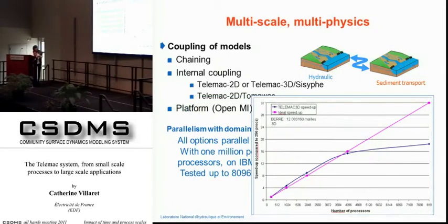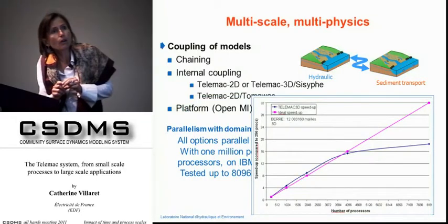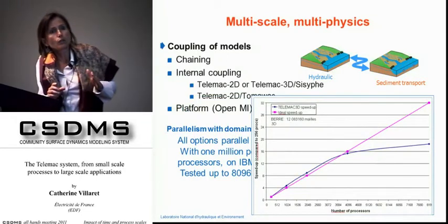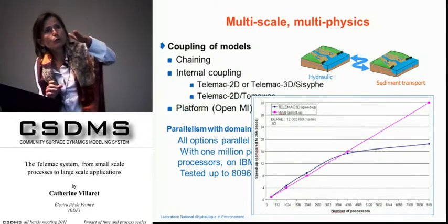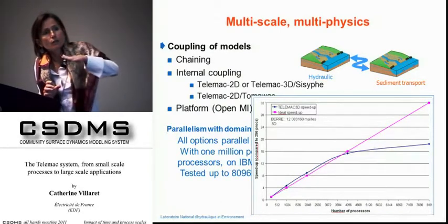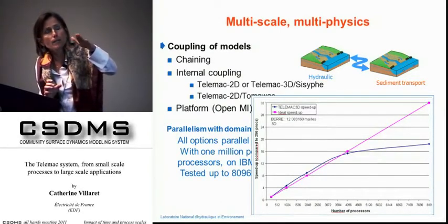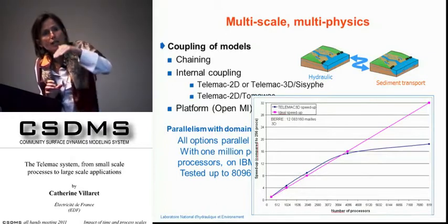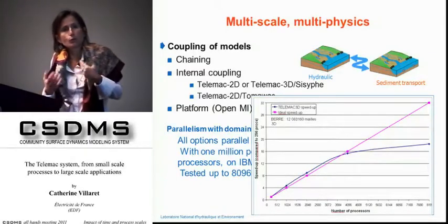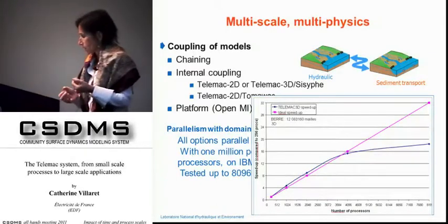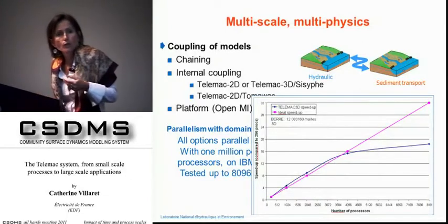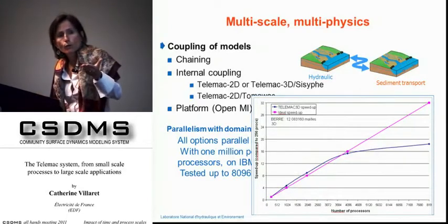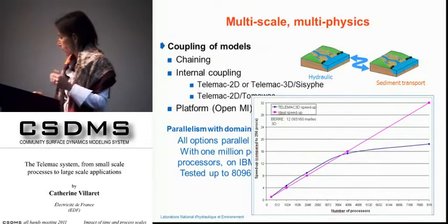This shows the parallel speed-up results. If you are along the red curve, it's the ideal speed-up. But we start to diverge and it becomes less efficient above 4,000 processors.